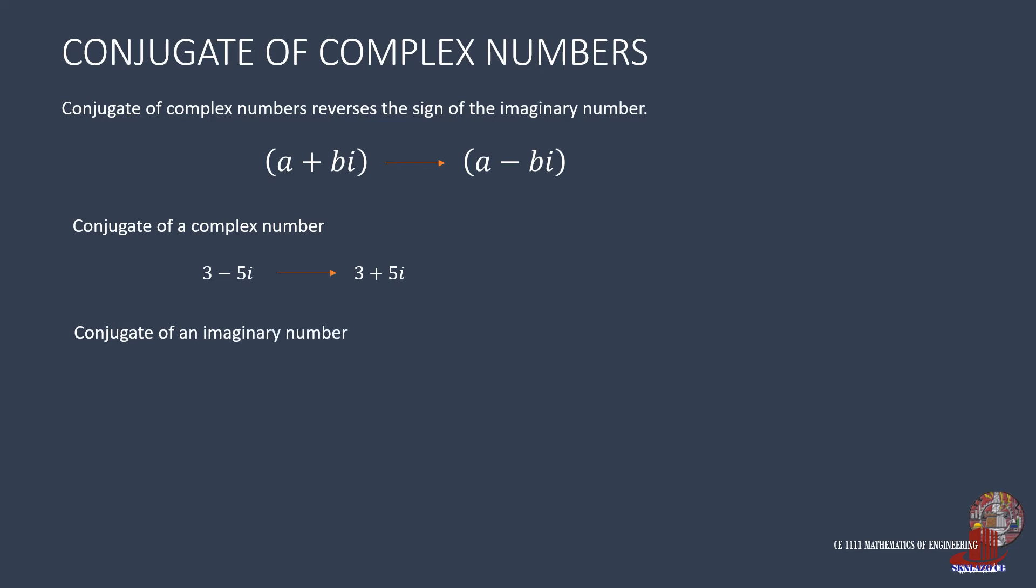The conjugate of an imaginary number 2i is similar as writing it as 0 plus 2i, and its conjugate is 0 minus 2i, which is the same as simply negative 2i. The conjugate of a real number 5 is just the same as number 5. This is a real number which is not affected by the conjugate.